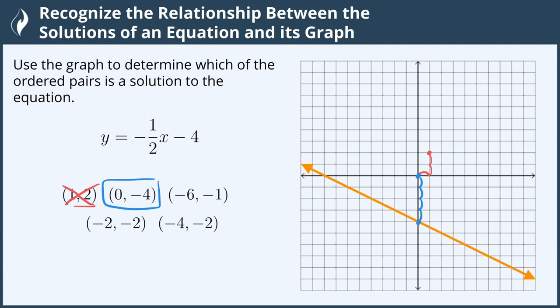Let's try the next one, (-6, -1). Starting at the origin, we'll move negative six in the x direction — one, two, three, four, five, six — and then down one in the y direction, and our point again lies on the line, so the ordered pair (-6, -1) is a solution to the equation.